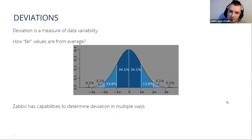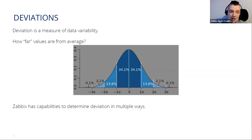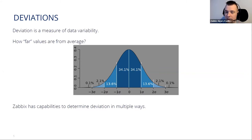In order to proceed with the trigger, we also need to understand the meaning of deviation. Deviation is a measure of data variability — how far values are from the average. This is used to find those remaining points and determine how far they are. Zabbix provides four types of deviation methods. There is a default one used for most cases, but you can also choose other implemented options.